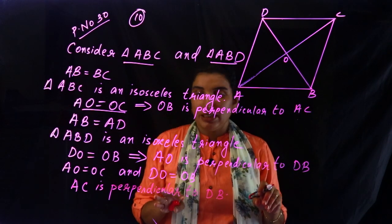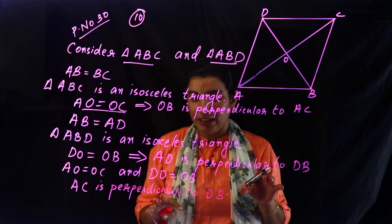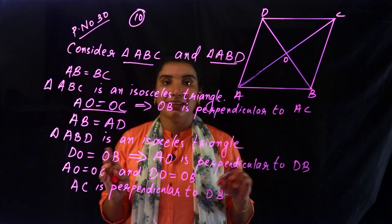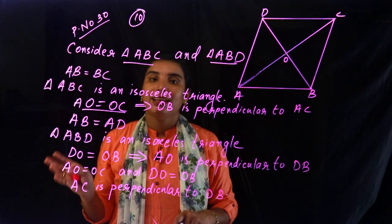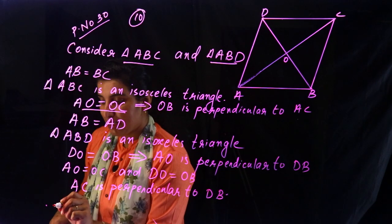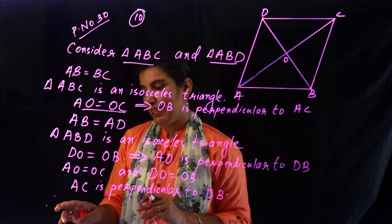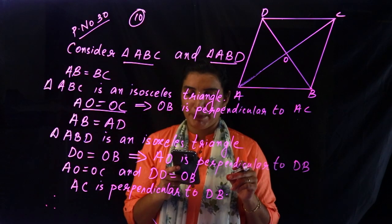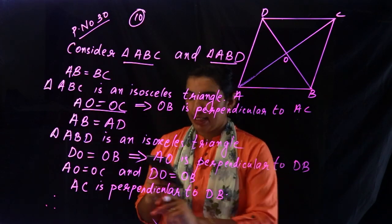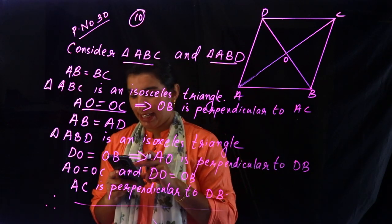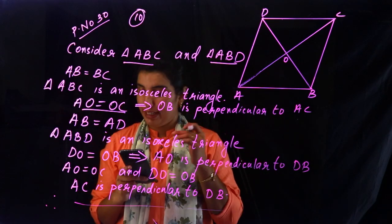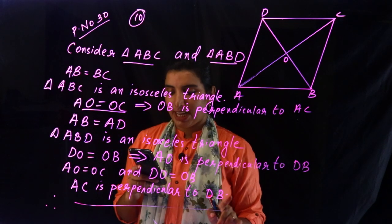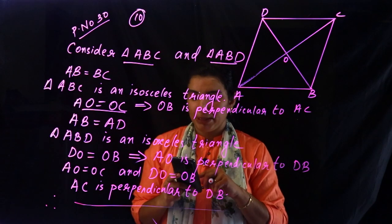This is the answer. Therefore, if all sides of a parallelogram are equal, then each diagonal is a perpendicular bisector of the other. Hence proved.